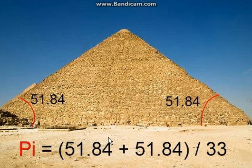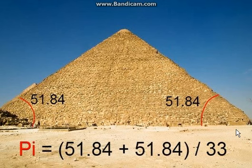51.84 is important because we see it on the left and on the right side of the Giza pyramid. And the number 33 is also an important number, and maybe in some video I will show you what I personally found about the number 33. You can also research number 33 by yourself on the internet, in libraries, among scholars etc. So pi is hidden among these numbers: 51.84 and number 33.